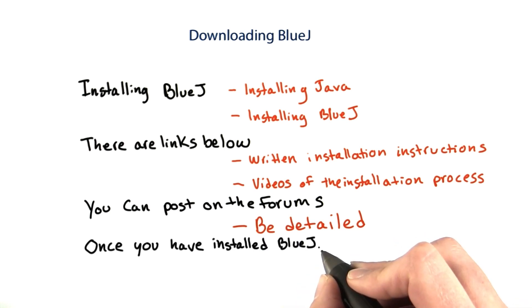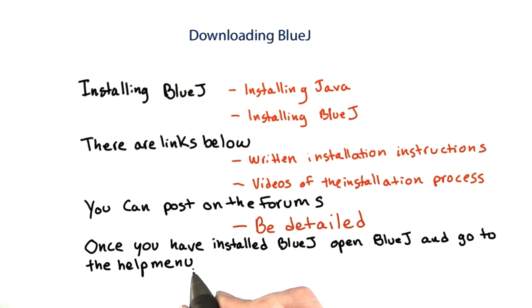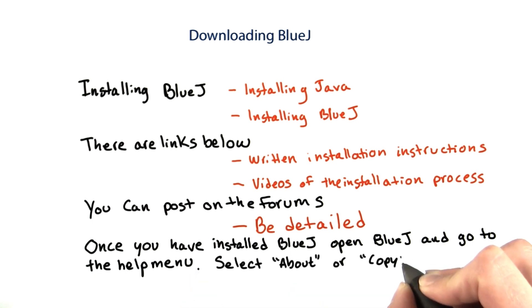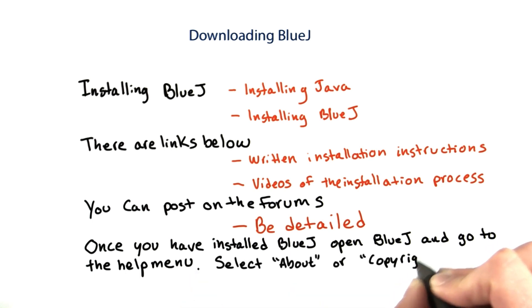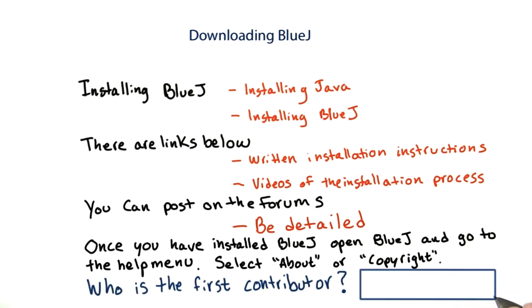Once you've successfully installed BlueJ, open BlueJ and go to the Help menu. Select About or Copyright — whichever one you see. Who's the first contributor on the team? In other words, what's the first name that comes up?